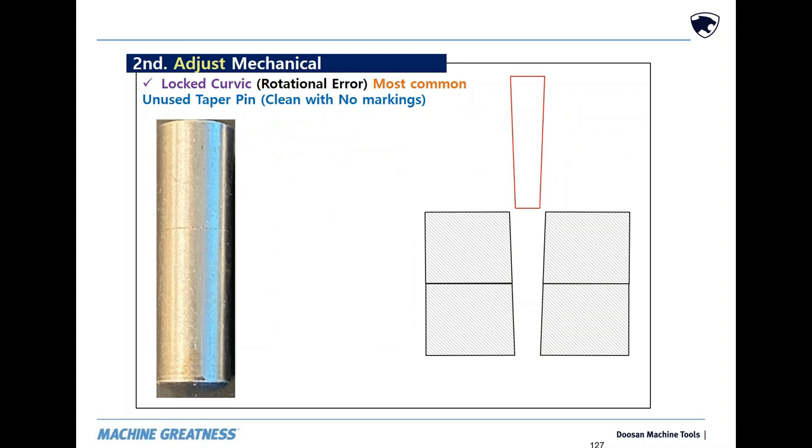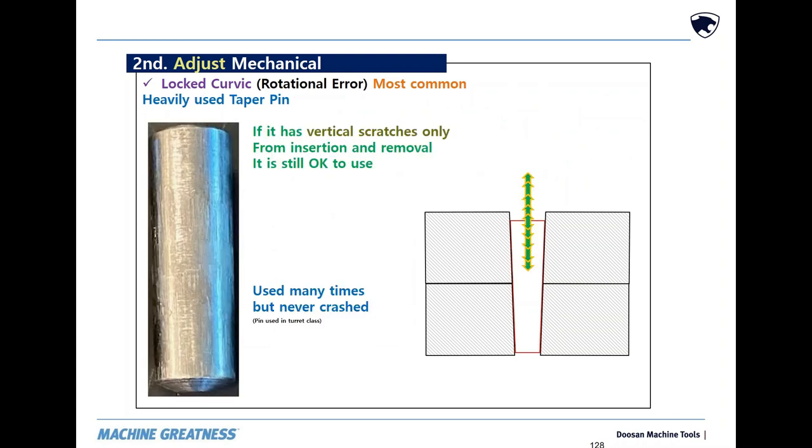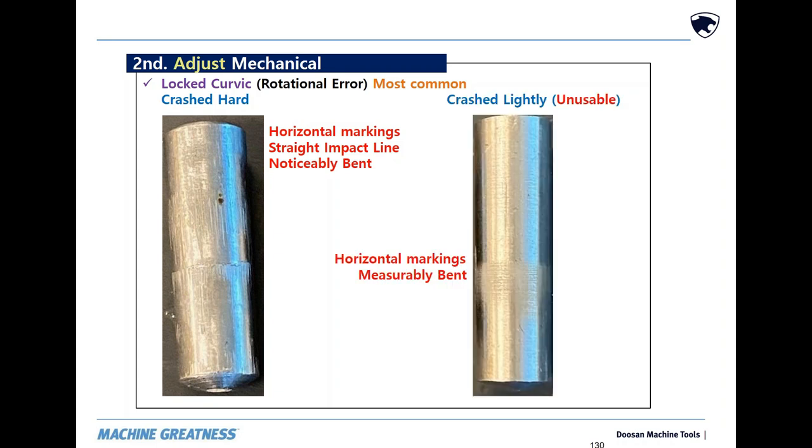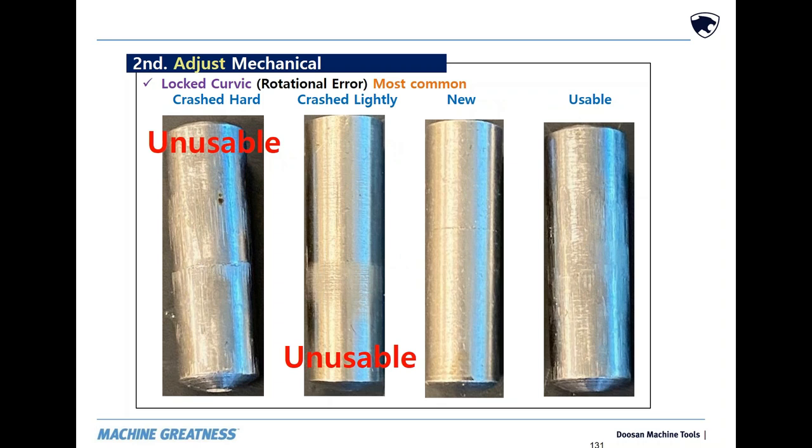This is what a new pin looks like, no blemishes. This pin has been in and out many times but never crashed. All its scratches and marks are vertical. Evidenced by being crashed is a horizontal ring at the scissor point. Even lightly crashed pins show horizontal markings as evidence. Stacking them alongside each other is an easy way to see the differences.